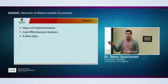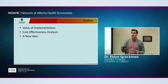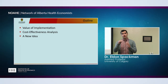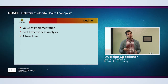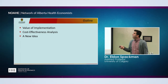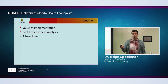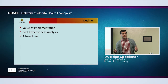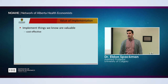I want to talk about three ways of getting value for money out of a current system: value of implementation, cost-effectiveness analysis in the context of something already ongoing, and a new idea that's been done a little in the UK. One way to make your system better off is to do more of the things you know are valuable — there are lots of good things already happening, and you can make the system better by doing more of them.